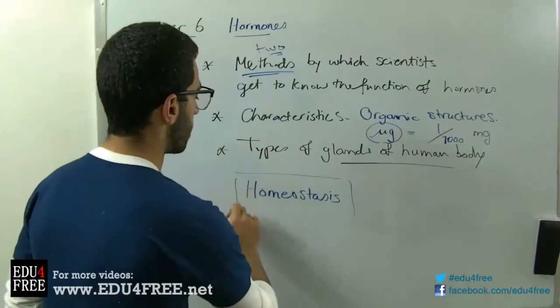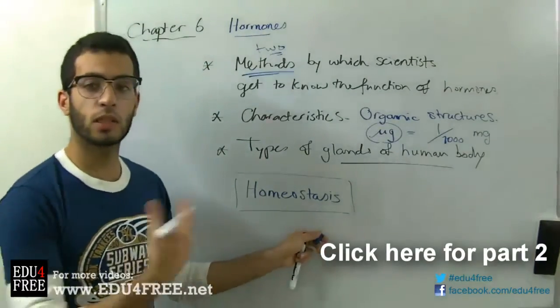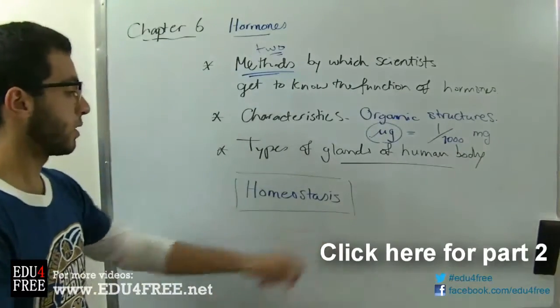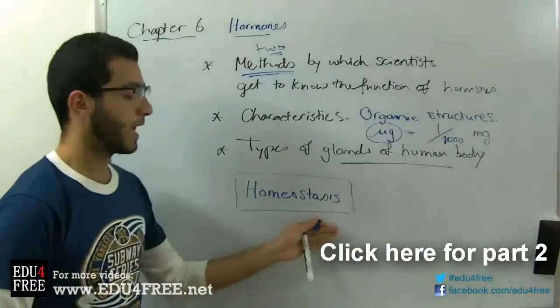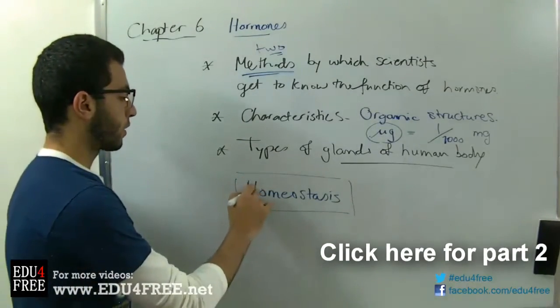So homeostasis is the process of keeping the internal activity of the body in balance with the external environment so that the human being can keep on living properly. So a very important function.